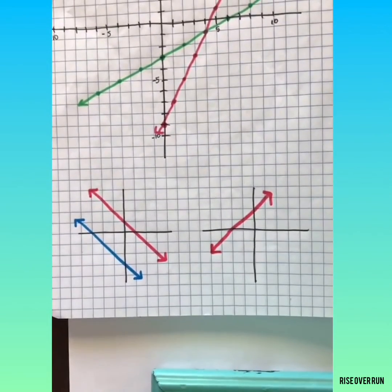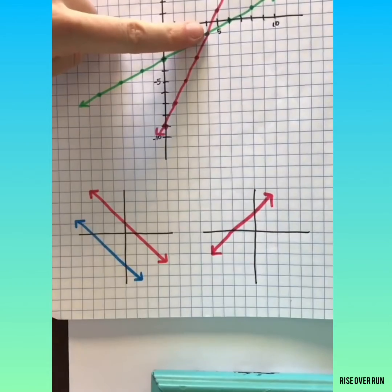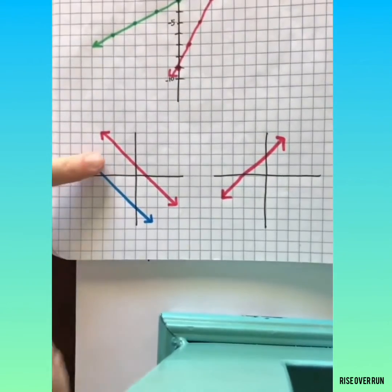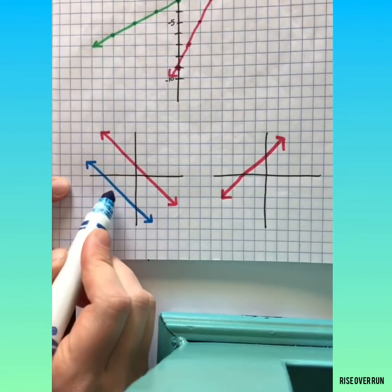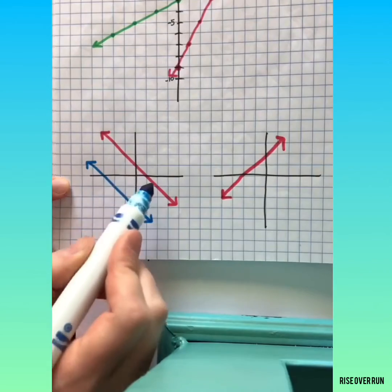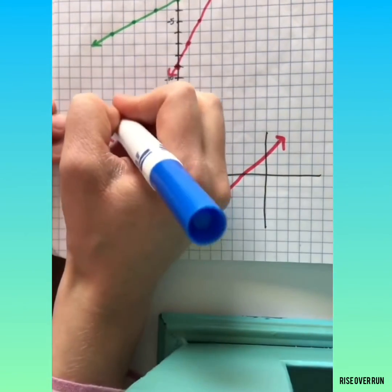A couple things to look out for when you're solving systems. A typical system will have one solution, one intersection. But watch out when you have parallel lines. If both lines have the exact same slope but different y-intercepts, they're parallel and they will never intersect. So that means there is no solution.